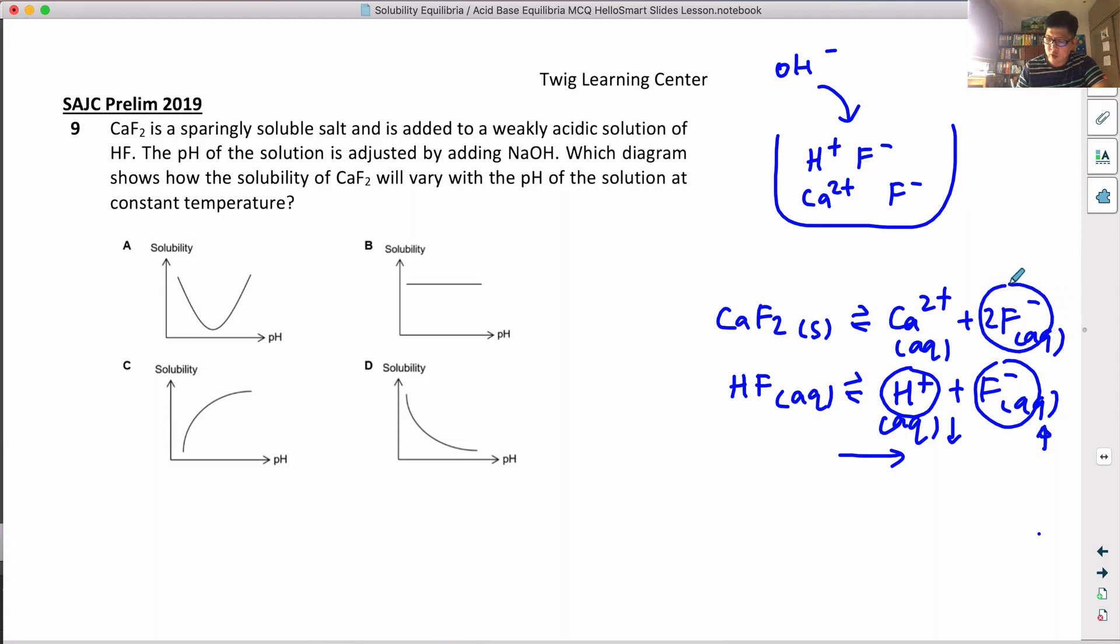When F⁻ concentration increases, the equilibrium position will shift to the left, suppressing the dissociation of calcium fluoride. This means the solubility of calcium fluoride will decrease with increasing pH.